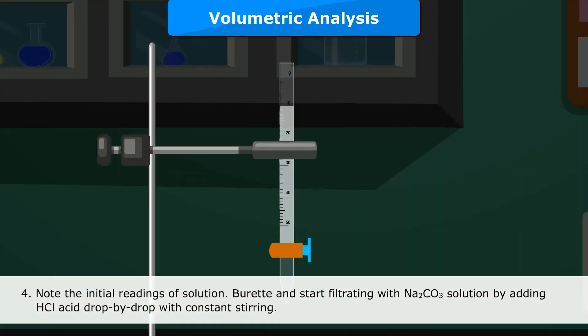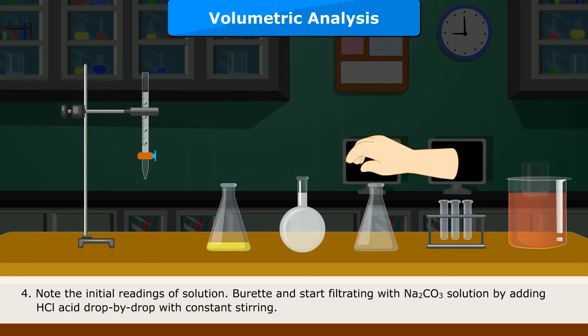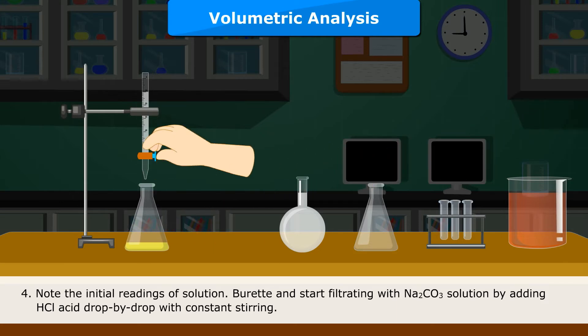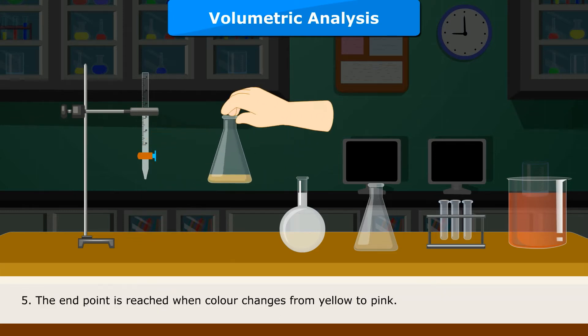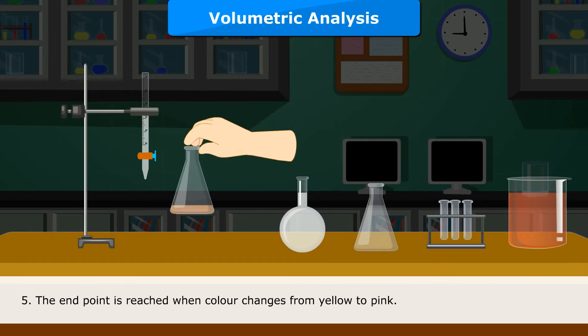reading of solution Buret and start titrating with Na2CO3 solution by adding HCL acid drop by drop with constant stirring. The end point is reached when color changes from yellow to pink.